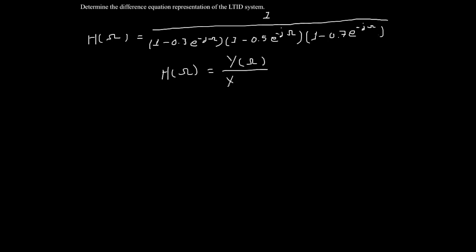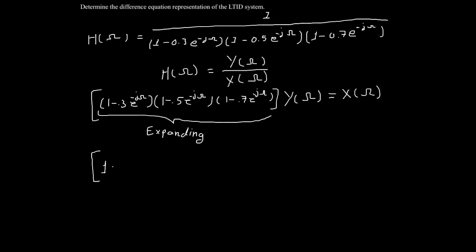In order to arrive at an expression for the difference equation representation of the system, we return to our original expression of H of omega, and recall that this transfer function is simply the ratio of the system's output over input.